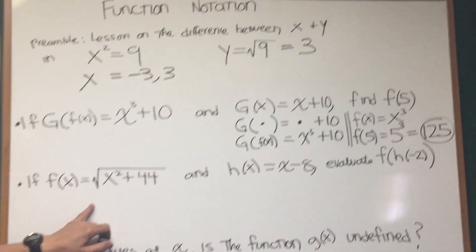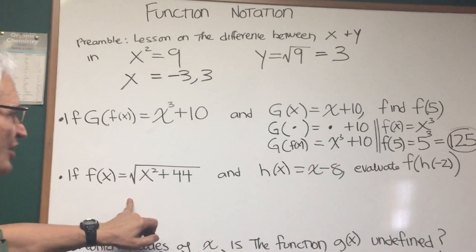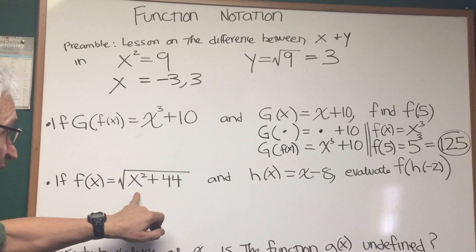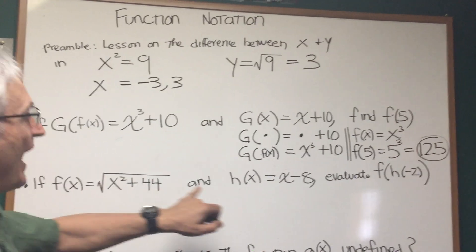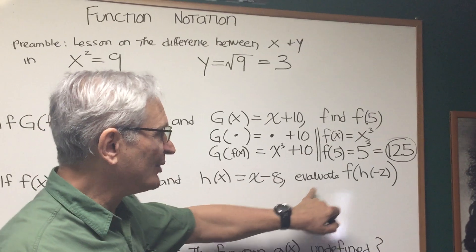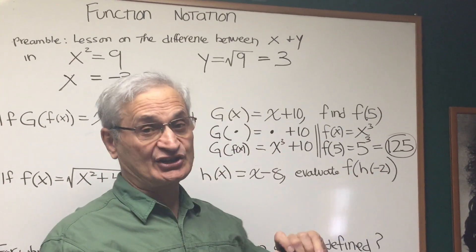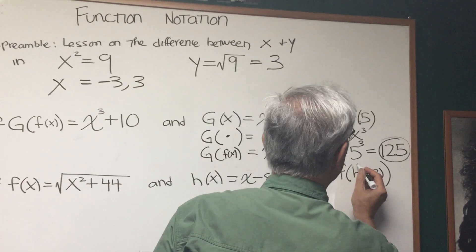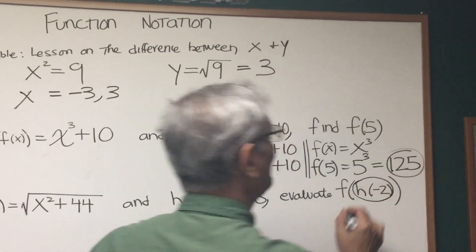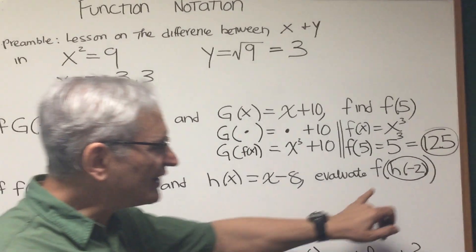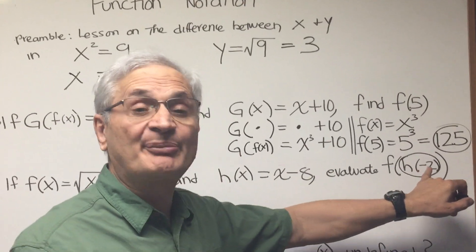Let's look at this next problem in function notation. If f of x equals the square root of x squared plus 44, and h of x equals x minus 8, evaluate f of h of minus 2. So, the way we deal with function notation, we start with the innermost expression. Let's find the value of h of minus 2.